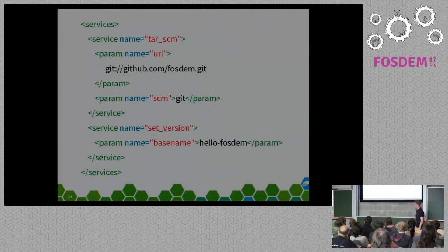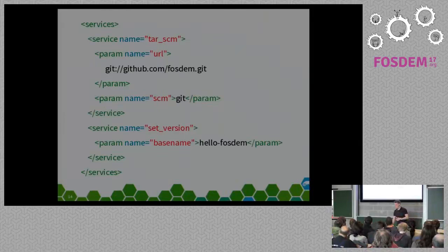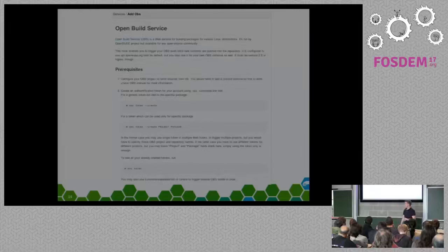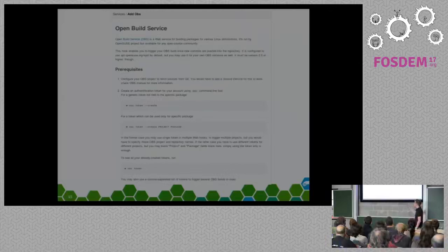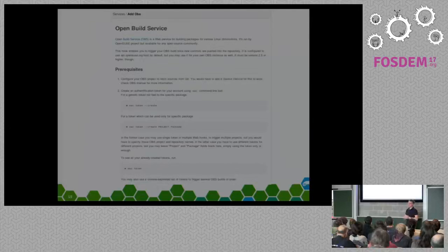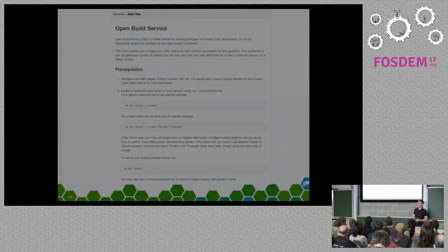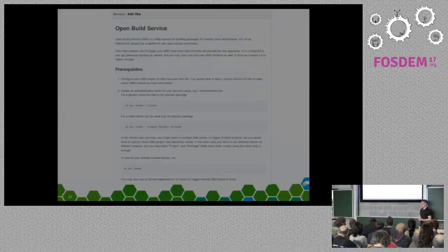There is another service, for instance set_version, which will automatically update your package description with the correct version. And how do you trigger it? In GitHub we have a really nice feature — there is a GitHub hook already built in. You just have to specify your token of the project. There is already a default instance of the build service specified, but if you want to use your own build service instance, you can enter that one. That means with every commit you do to your GitHub or some other SCM system, you get the source code committed to the build service, which will automatically trigger a rebuild of your package.